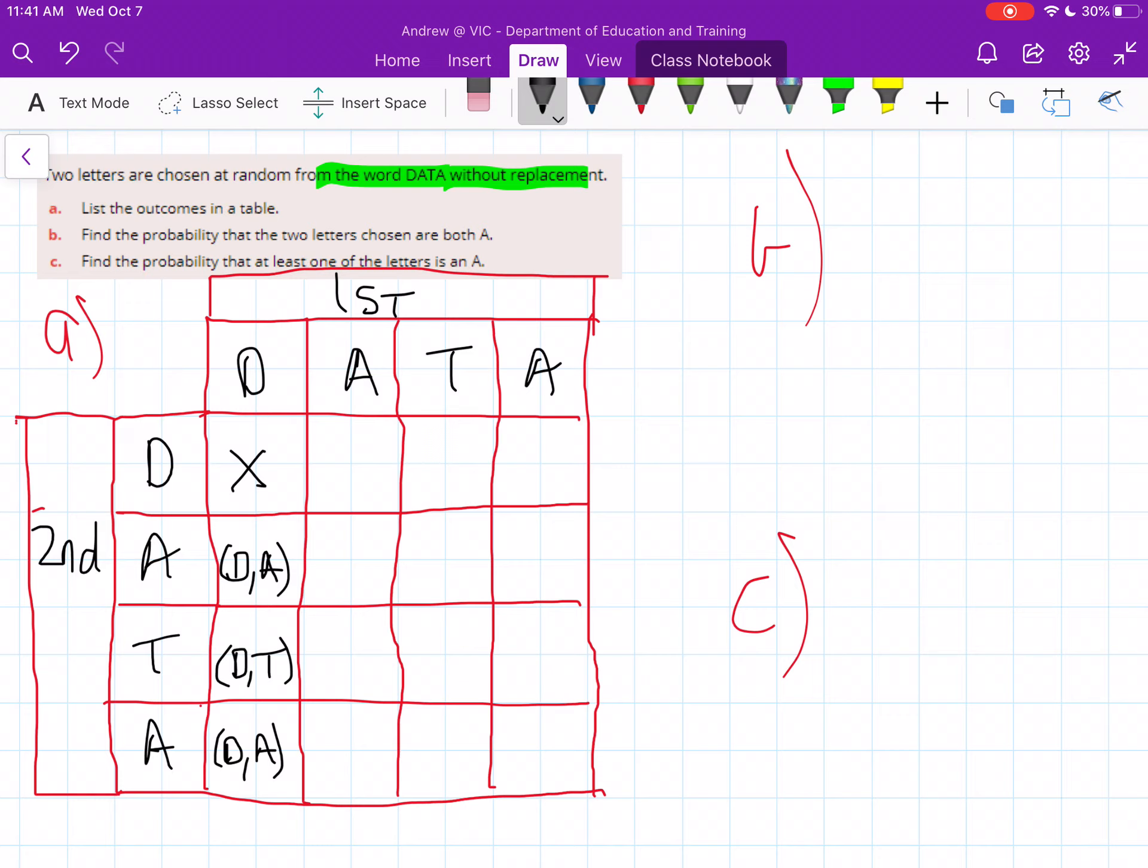So we'll go down the A column. Here we've got our first selection of A and then the second selection of D at the top. So we can have A, D. This is the exact same A in the word, so we actually can't choose this twice. So this is a cross and you'll start to see a pattern here with the ones you can't choose.